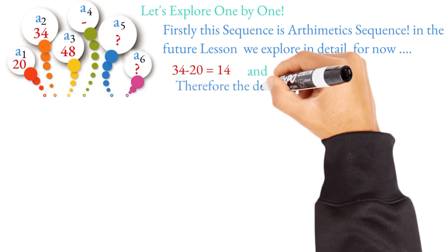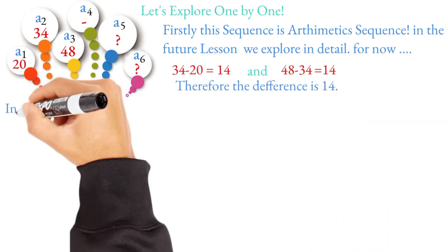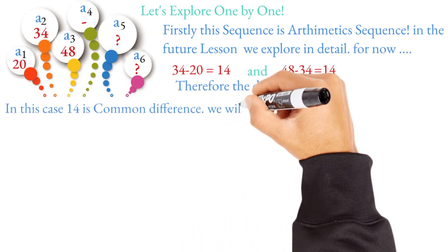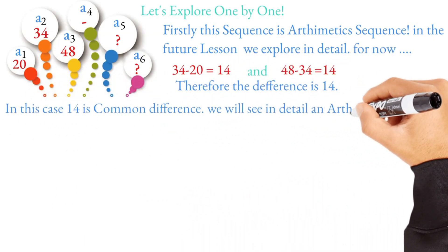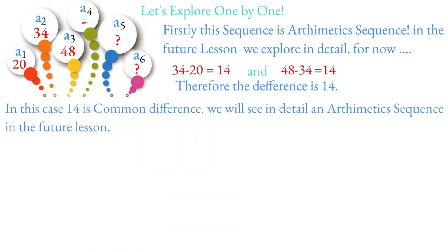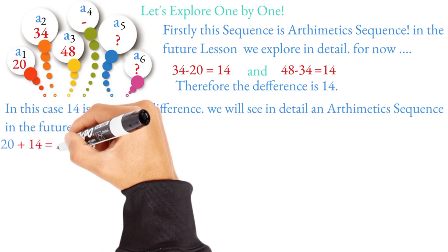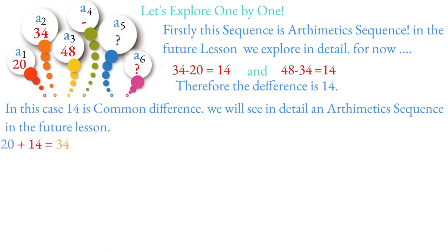The difference between consecutive terms is a common difference, which is a constant term. When you look at the difference between consecutive terms, that constant difference is called the common difference.